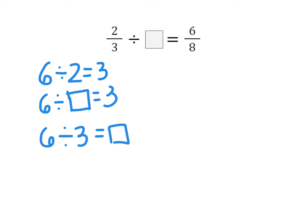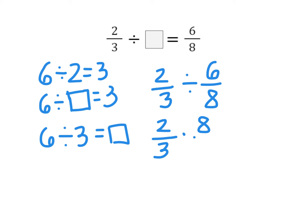We'll do the same thing with our fraction problem. We're going to take our dividend, 2 thirds, and divide it by our quotient, 6 eighths. To divide a fraction, we multiply by the reciprocal, so this becomes 8 over 6. Let's simplify where we can: the 2 and the 6 share a factor of 2, so this becomes 1 and 3. Now I can multiply: 1 times 8 is 8, and 3 times 3 is 9.